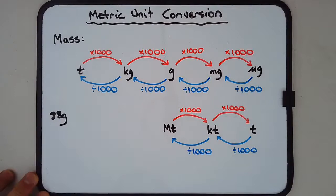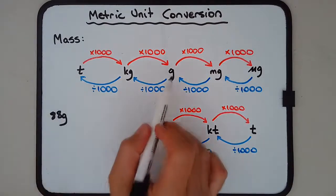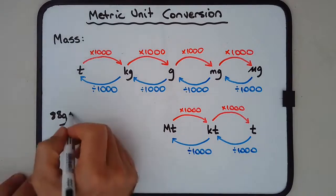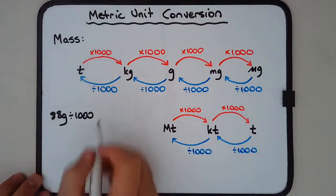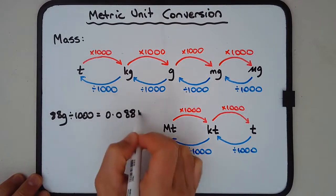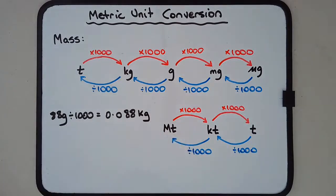So if I had, for example, 88 grams and I wanted to convert that to kilograms. So grams to kilograms, we'll follow the blue arrows, which is the division. So dividing that by a thousand, and we get 0.088 kilograms.